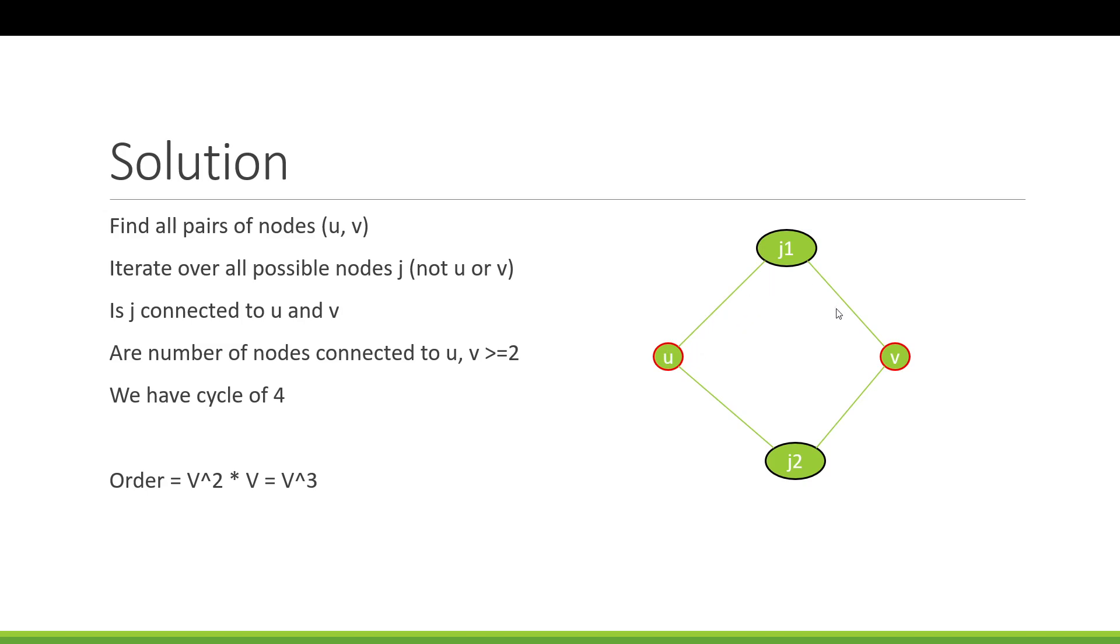Because, you see, essentially, if it goes like this, then this set forms a cycle of four. So we can apply this to any graph. And as long as you have a set of two nodes and two more nodes that connect to them a certain way, which is here, then you have a cycle of four.